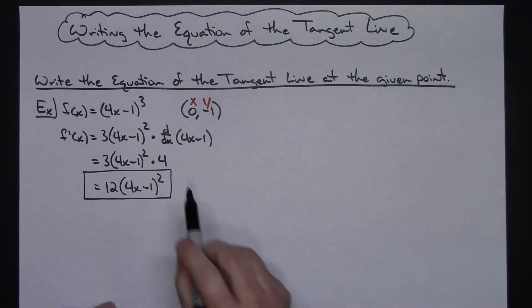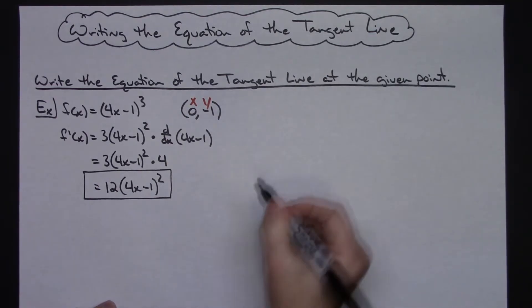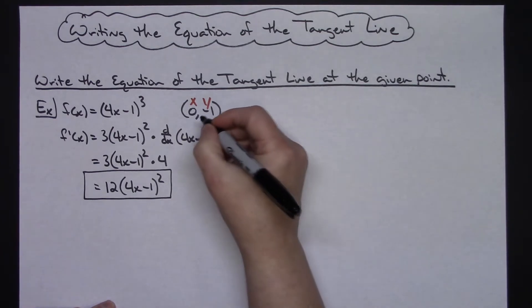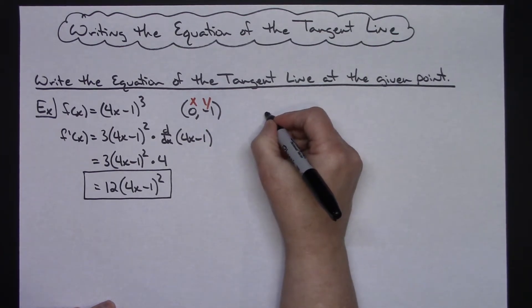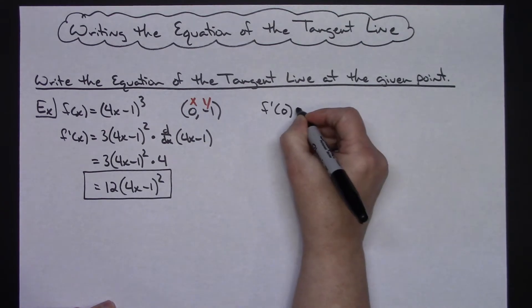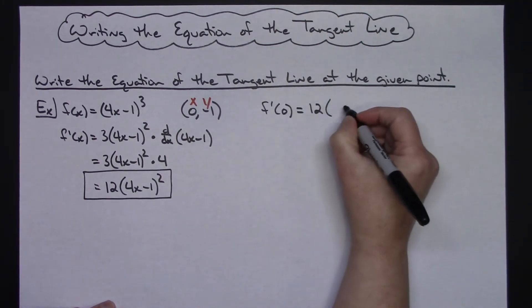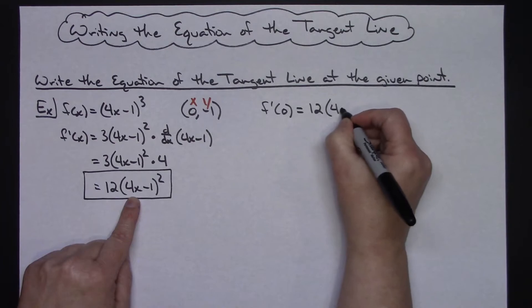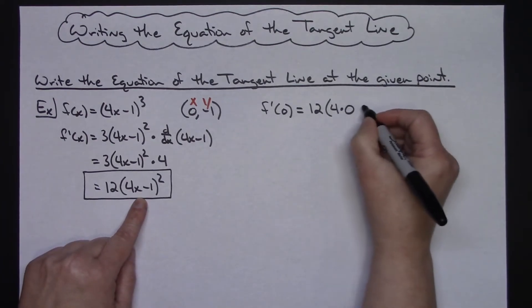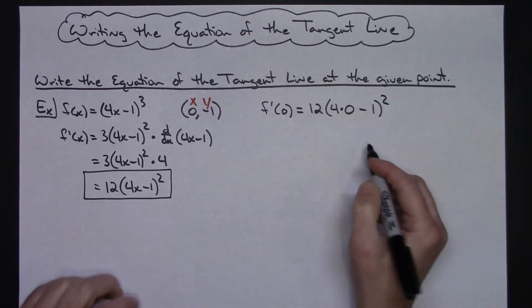So what I'm going to do is I need the derivative at x = 0. So I'm going to plug it into my derivative to find the actual slope at that point. So f'(0) = 12(4·0 - 1)².